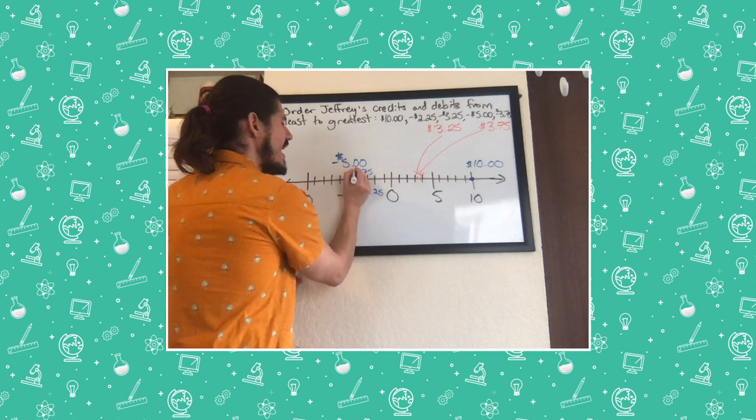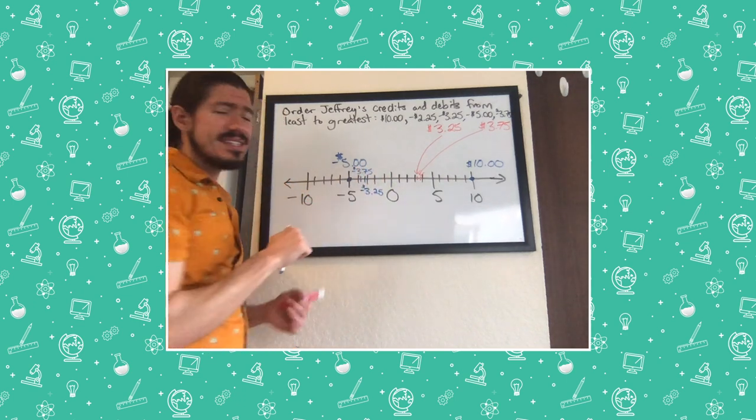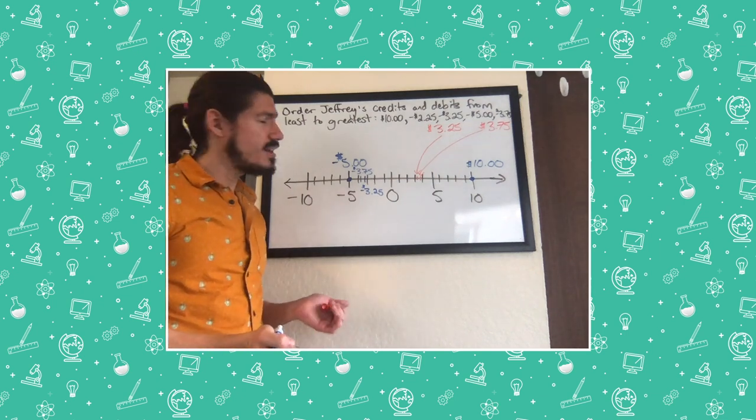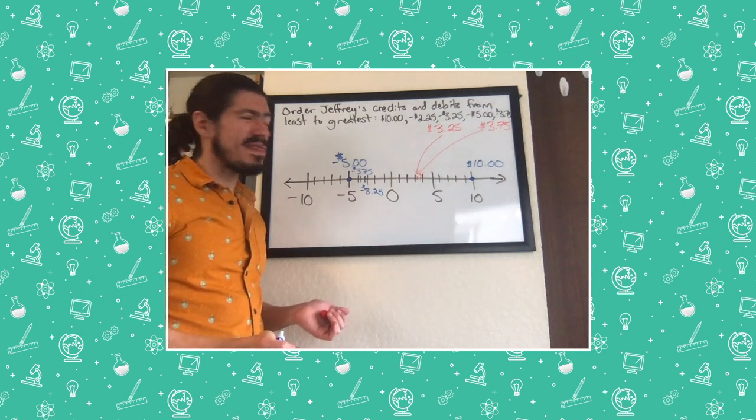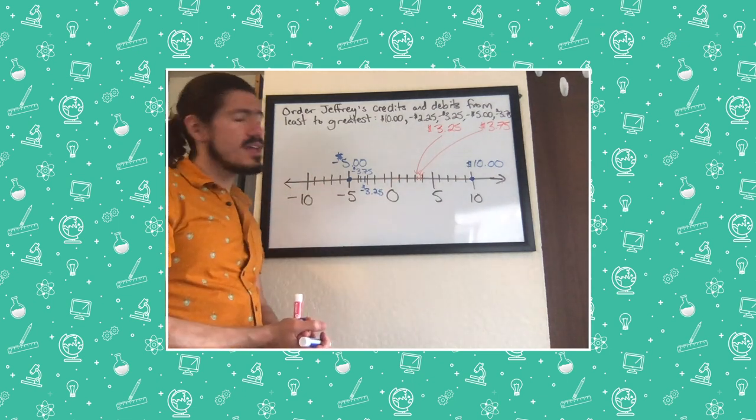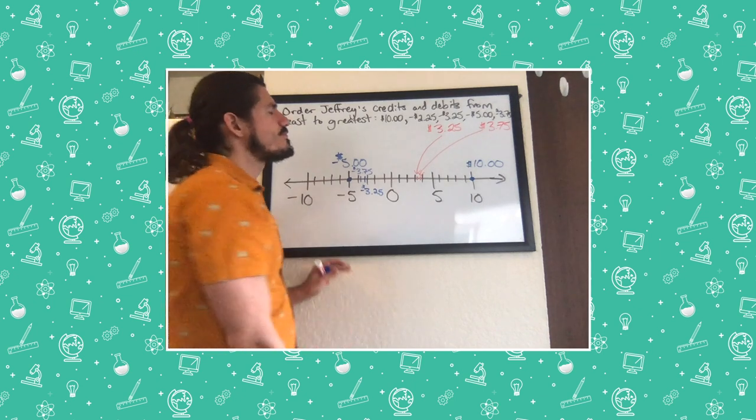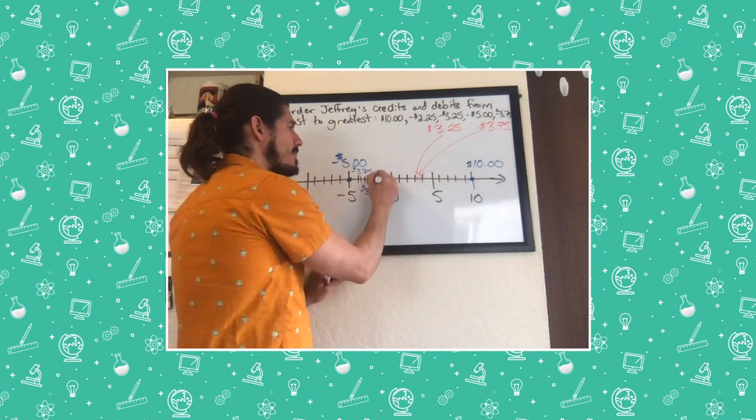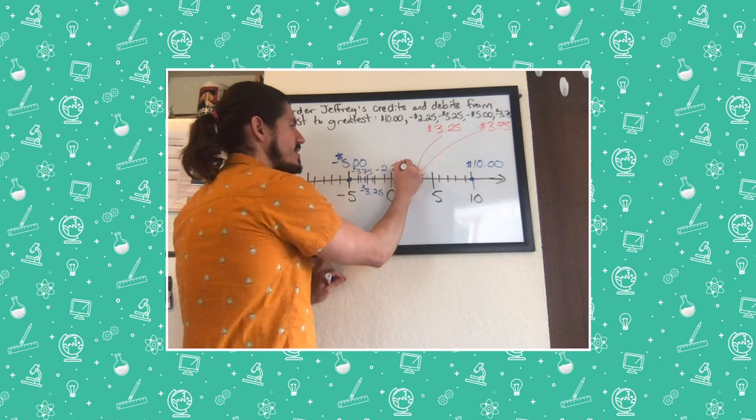Therefore, negative $3.75 is a smaller amount than negative $3.25. It can be tricky to think about that, but if we order their opposites and then just reverse them for the negative numbers, we'll always get the right order. That leaves negative $2.25. That must be the second largest amount.